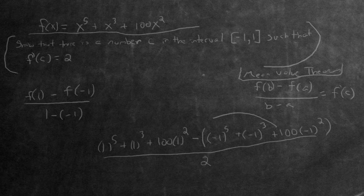The next step is to simplify the numerator. For f(1): 1 + 1 + 100. For f(-1): -1, -1, and positive 100.